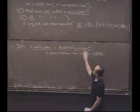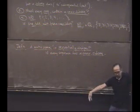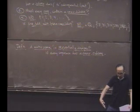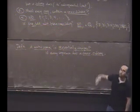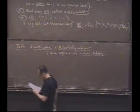Because really, what does sequentially compact mean? It means this space is small enough that every sequence, even if the sequence doesn't converge, you can find some subsequence that converges.